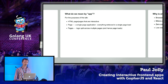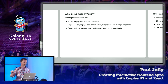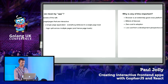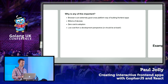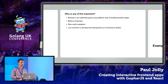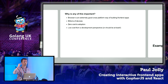What do we mean by an app? For the purposes of this talk, it's either an HTML page or HTML pages that are interactive, using those two definitions. If it's just one page, this is our classic single-page application. If it's multiple pages, that means we've got our app split across multiple HTML pages. The browser is an extremely good cross-platform way of building front-end apps — it's cross-platform, there are billions of devices that run browsers, there's zero cost to adoption, and there's a low cost from a development perspective as well.